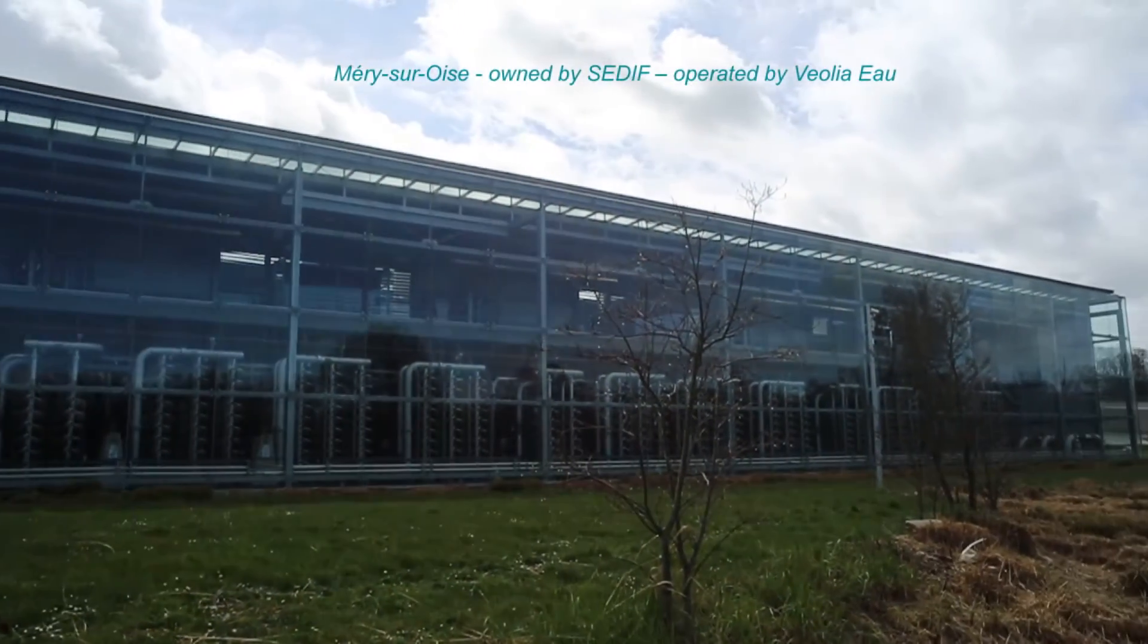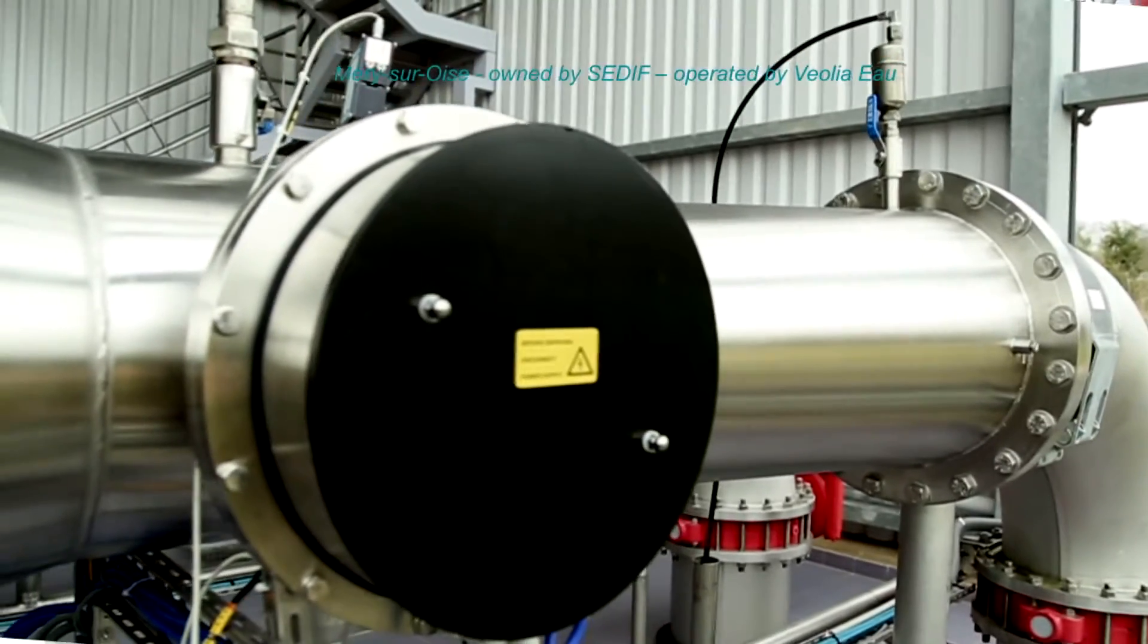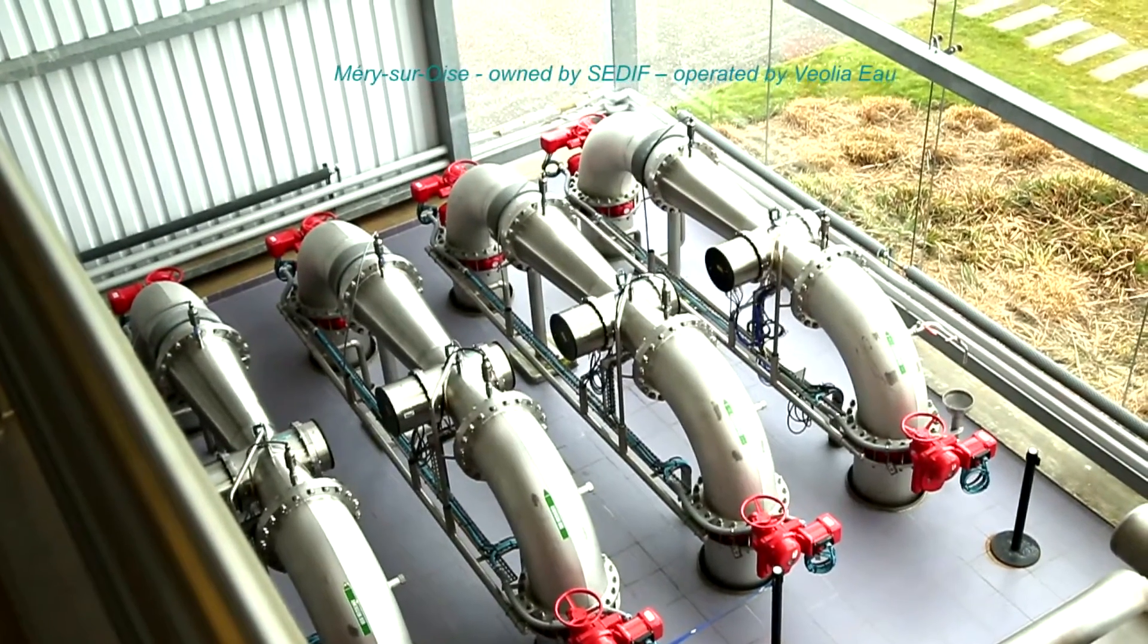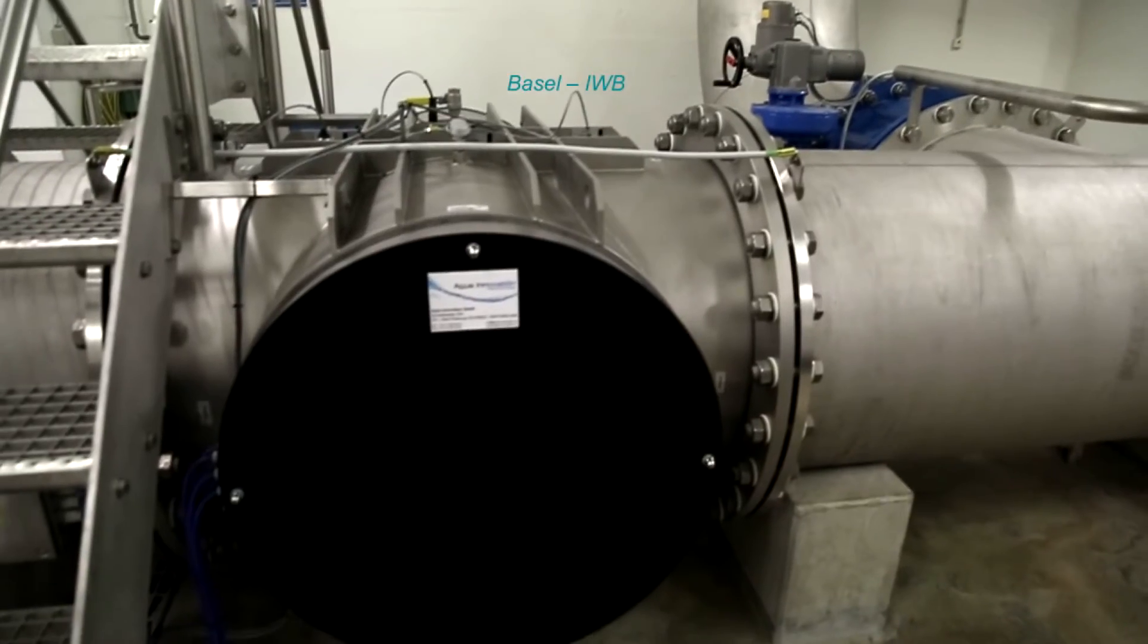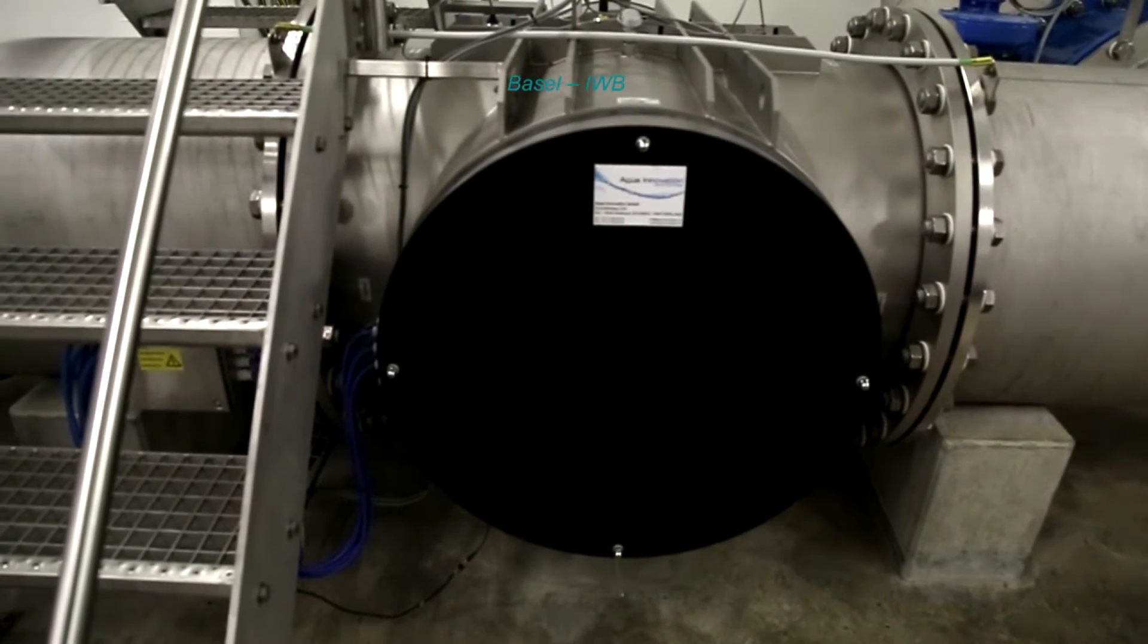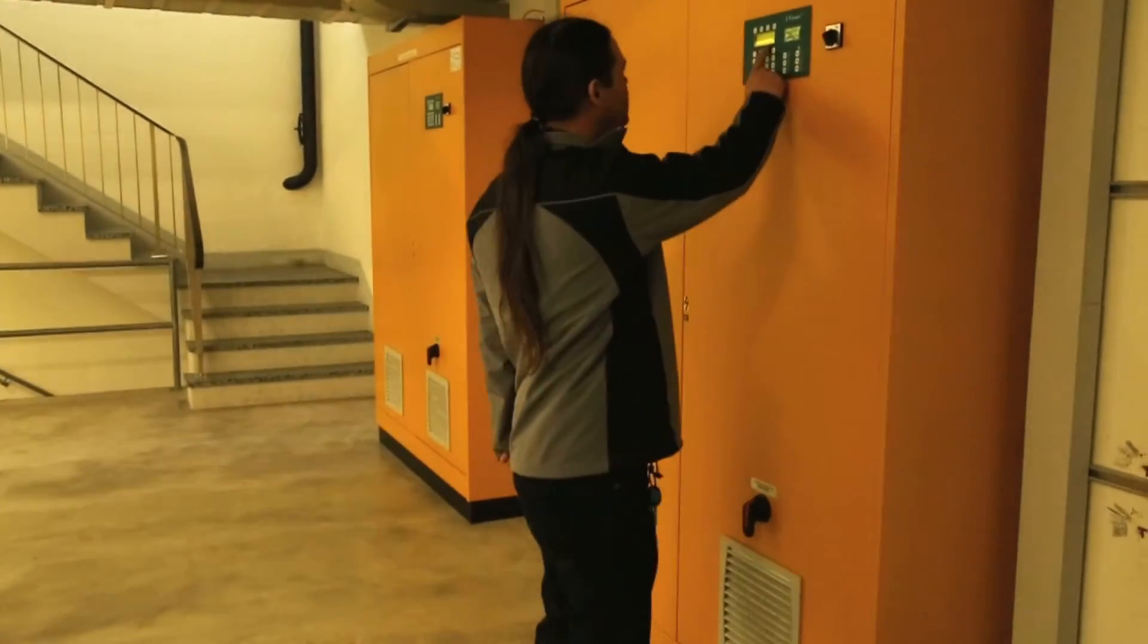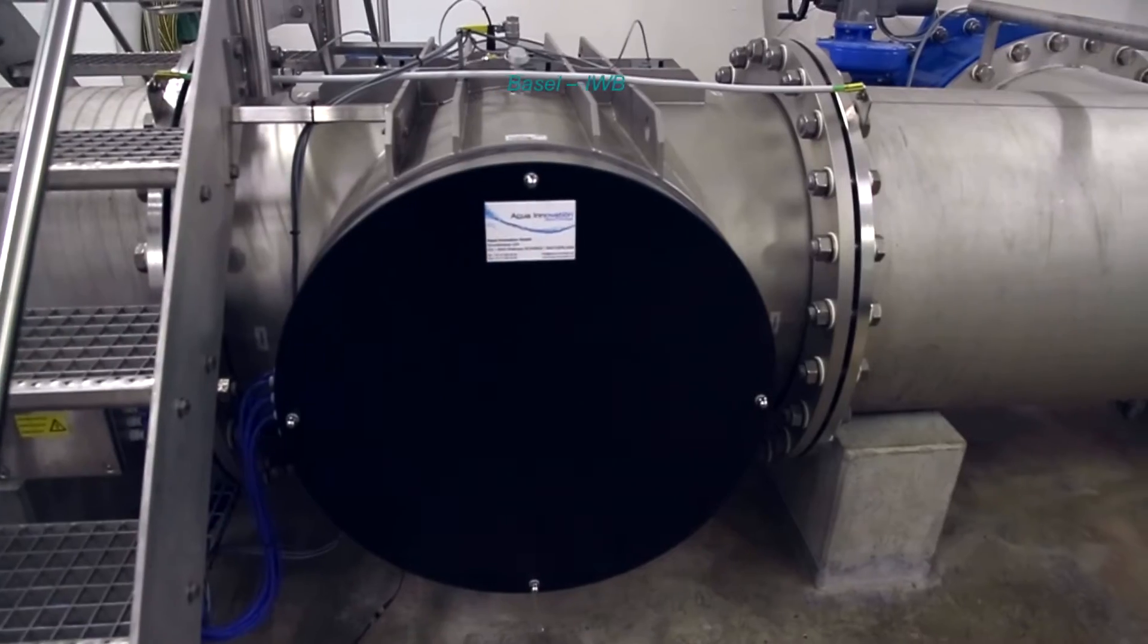The Mery-sur-Oise water processing plant near Paris in France has five Bursen reactors treating 200,000 cubic meters of river water per hour. In Basel, Switzerland, three 750mm reactors with a capacity of 3,100 cubic meters each deliver water for 200,000 inhabitants. Just a couple of examples of more than 12,000 Bursen reactors in operation.